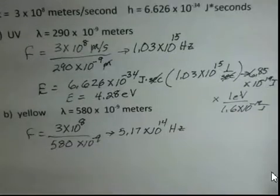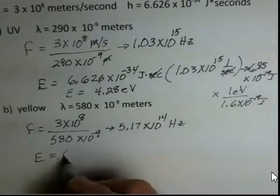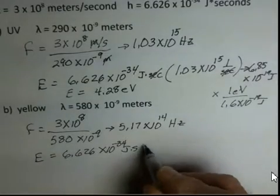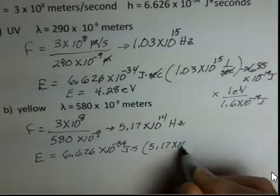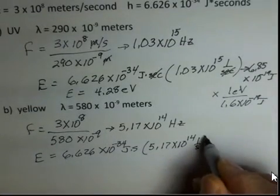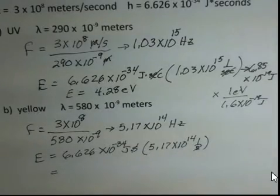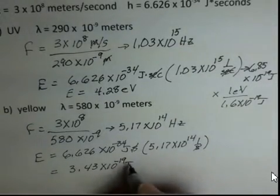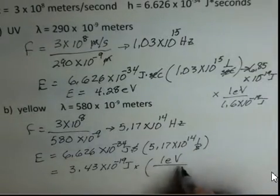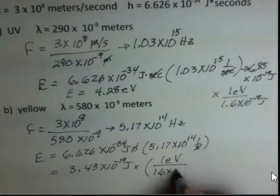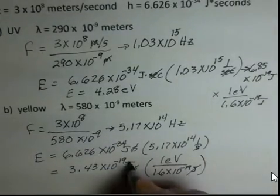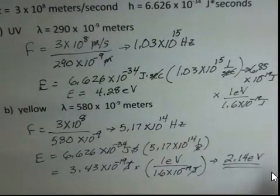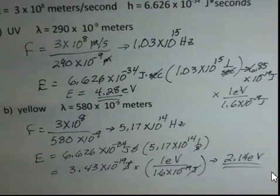And the energy is Planck's constant multiplied by the frequency, 5.17 times 10 to the 14th hertz. Again, hertz, I'm replacing it with 1 over seconds. Let me see the seconds units cancel. And in terms of joules, 3.43 times 10 to the minus 19 joules. Then multiply by the conversion factor that one electron volt is 1.6 times 10 to the minus 19 joules. The joules units cancel, and I get 2.14 electron volts.